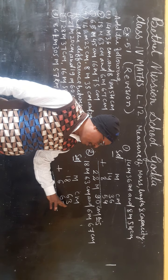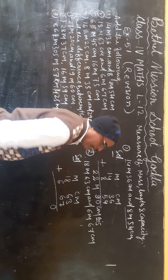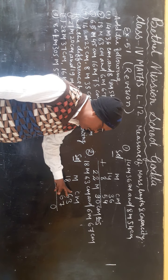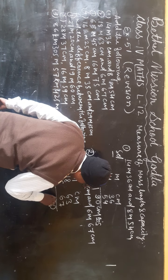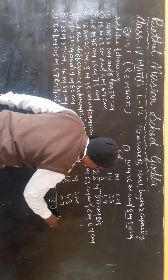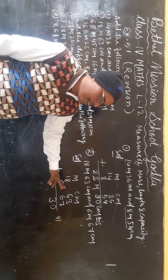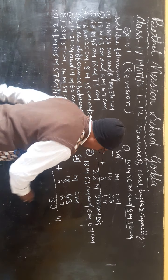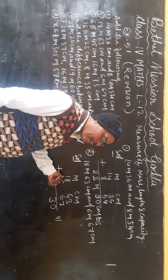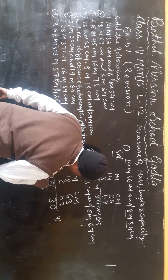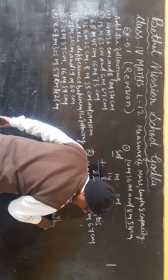So here: 7 plus 3 is 10, write 0, carry 1. 6 plus 6 is 12, plus 1 carry is 13, write 3, carry 1. 8 plus 6 is 14, plus 1 is 15, write 5, carry 1. 1 plus 1 is 2. Answer: 25 meter 30 cm. Clear?